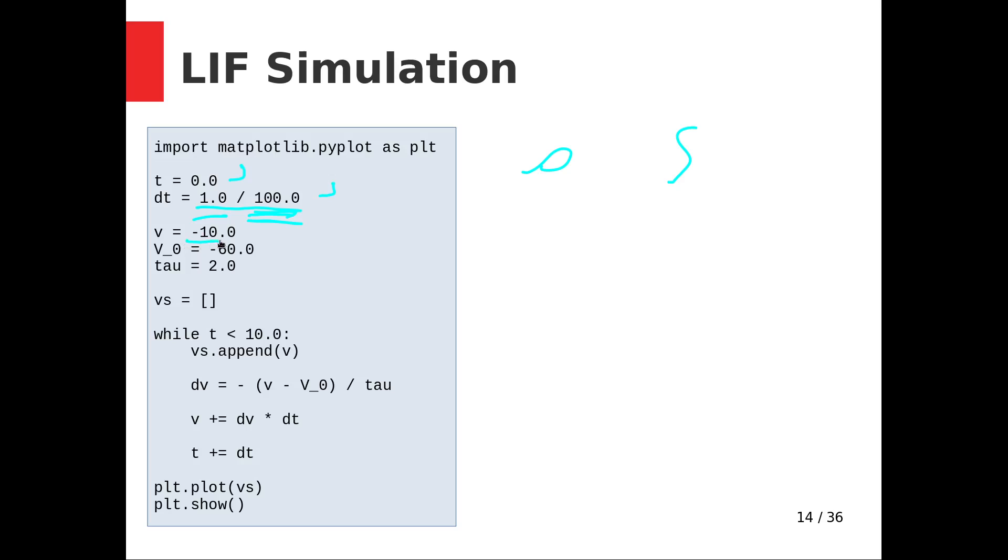I'm going to start out at a voltage of negative 10 for no reason at all other than I want you to be able to see when I graph it the exponential decay happening. V0 is negative 60 millivolts, which is a reasonable value.